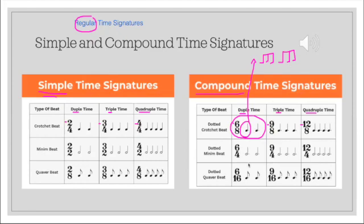For the compound time signatures, another thing that you can say is that these dotted notes, or all the beats, divide into three naturally. So that dotted crotchet divides into three quavers, the dotted minim divides into three crotchets, and the dotted quaver divides into three semi quavers. If you study them you'll see that there's a real pattern going on. The number six will mean two beats in a bar, number nine means three beats in a bar, and the number twelve would mean four beats in a bar.